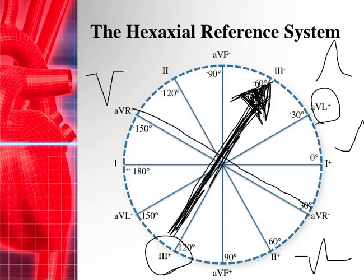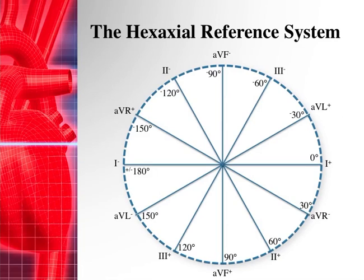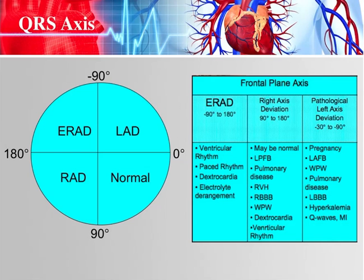That's the understanding of the hexaxial reference system. Just by looking at a 12-lead ECG, you'll be able to determine which direction the mean axis is going based on which leads are positive, which are negative, and which are equiphasic or biphasic. This matters because of axis deviation — the QRS axis heading in a normal direction would be classified as normal axis.